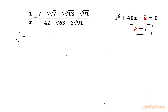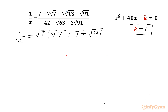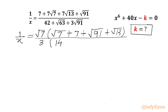I can write 1 over x equal to — let us take root 7 common. So root 7 is common in the bracket. It will be root 7 plus 7 plus root 91 plus root 13, over — let us take 3 common from the denominator. So in the bracket: 14 plus root 7 plus root 91.